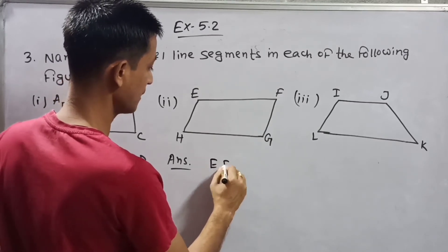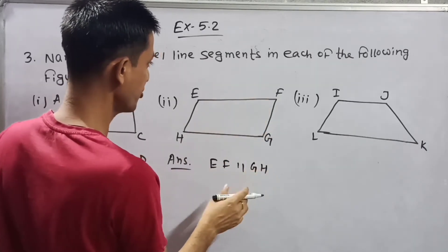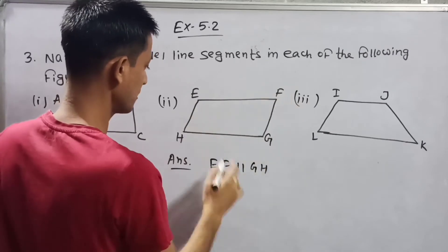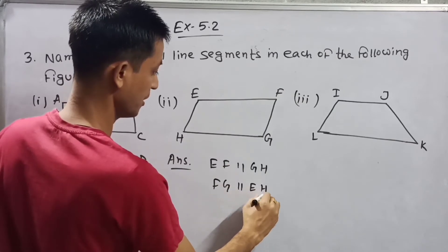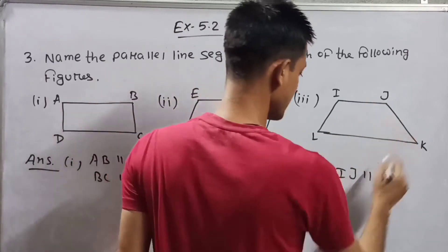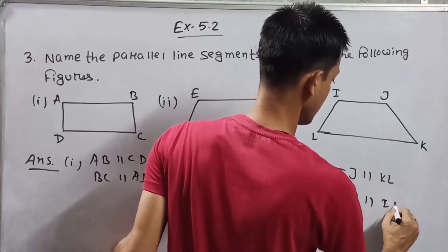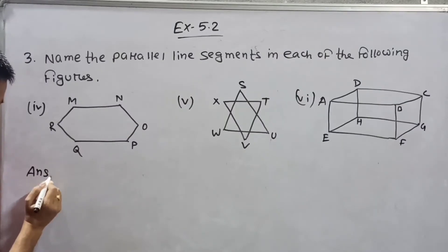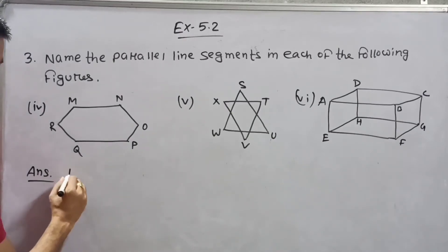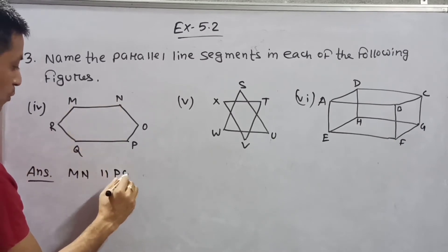For number two: EF is parallel to GH, and FG is parallel to EH. Now here, the answer: IJ is parallel to IL. And MN is parallel to PQ.